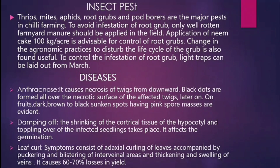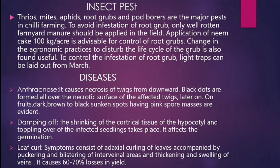To avoid infestation of root grub, only well-rotted farmyard manure should be applied in the field. Application of neem cake at 100 kg per acre is advisable for control of root grubs. Changes in agronomic practices to disturb the life cycle of the grub are also found useful. To control the infestation of root grub, light traps can be laid out from March.